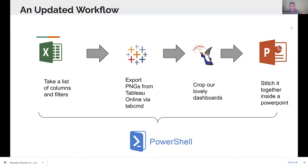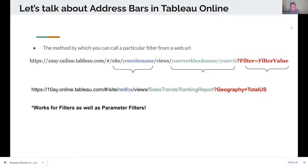This introduces another utility called ImageMagick — an old-school image editing software that allows you to, from the command line, crop photos. So we're going to have a new workflow: we'll still take a CSV list with all of our filters set up, still export it into Tableau, but now we're going to have ImageMagick crop those dashboards, stitch it up in PowerPoint, and have it all be executed through PowerShell.